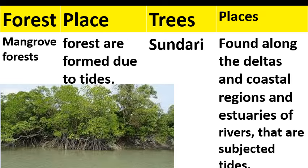Mangrove forests are also called tidal forests because they are formed by the tides of the sea. The most common tree found here is the sundari tree in the Gangetic delta. These mangrove forests are found along the deltas and coastal regions and estuaries of rivers subjected to tides, such as the Ganga, Godavari, Mahanadi, and Krishna.